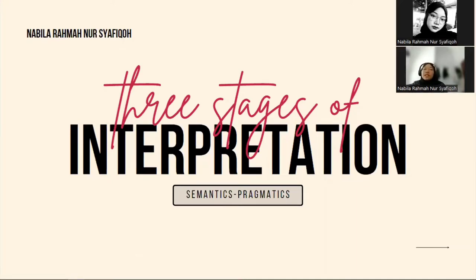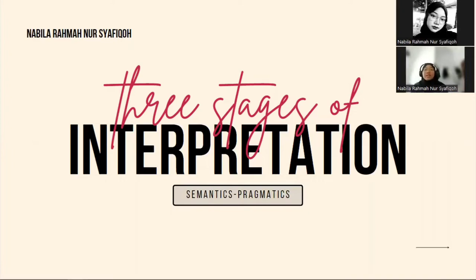The essential difference between sentences and utterances is that sentences are abstract, not tied to context, whereas utterances are identified by their context. This is also the main way of distinguishing between semantics and pragmatics. If you are dealing with meaning and there's no context to consider, then you are doing semantics. But if there is a context to be brought into consideration, then you are engaged in pragmatics.